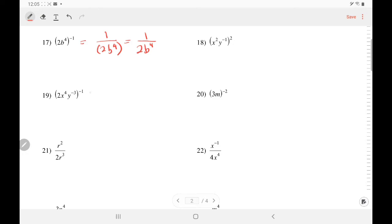Likewise, in number 19, the entire parenthesis has negative 1. So the entire content is moving down. And this time, I won't even bother with the parenthesis because it's to the first power. So 2X to the 4th.